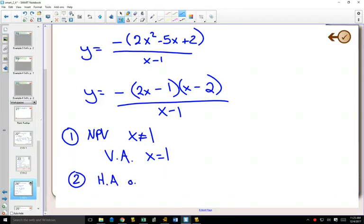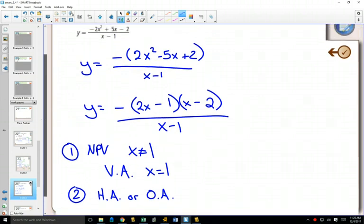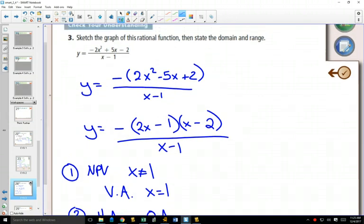Step 2, looking at whether or not we have a horizontal asymptote or an oblique asymptote. Well, maybe you're getting good at just looking at the degrees. You see that we have a degree that's higher in our numerator than our denominator. And this resulted in holes or oblique asymptotes. There's no holes in this one, so this time it will be an oblique asymptote.